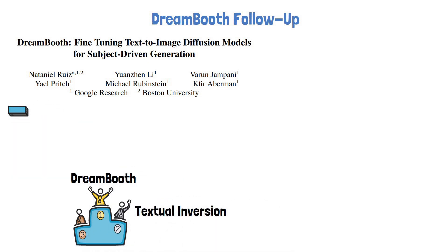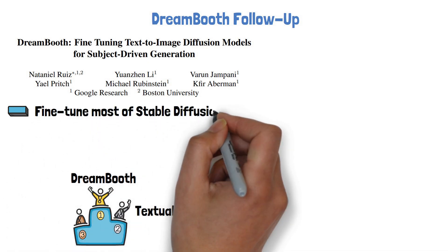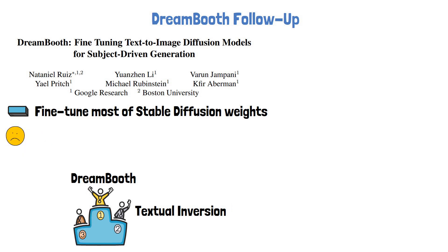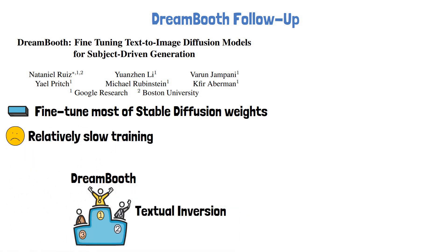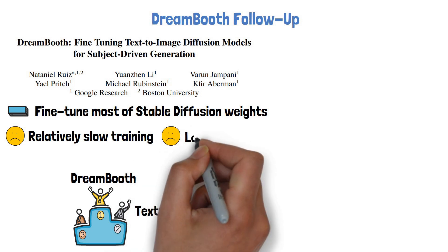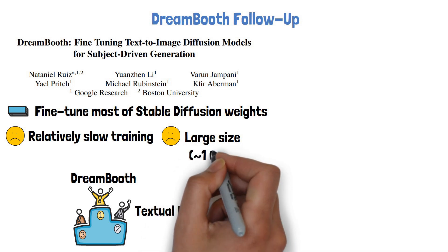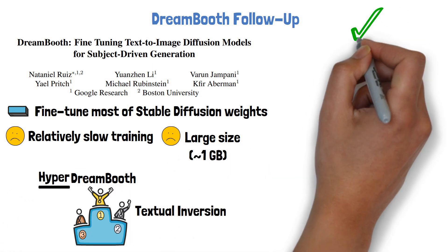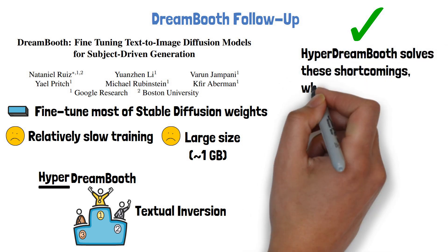However, with DreamBooth there is a need to fine-tune most of the entire Stable Diffusion model, which brings two noticeable shortcomings. One is that it is relatively slow to train, since there is a need to fine-tune the large Stable Diffusion model. Second, the personalized models we get are of large size — approximately 1GB for Stable Diffusion. With HyperDreamBooth, the researchers address these shortcomings while keeping DreamBooth's capabilities.